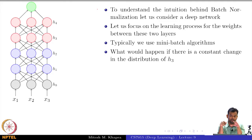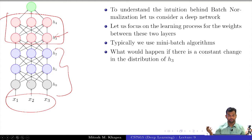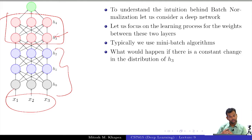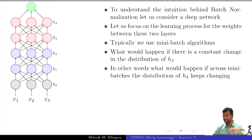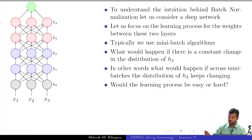What would happen if there is a constant change in the distribution of H3? As far as these two layers are concerned, H3 is the input and H4 is the output. It does not matter what X was or what distribution it came from. If across batches the distribution of H3 looks very different, that is a bad thing. If you have an input not following a fixed distribution — constantly changing during training — you try to adjust to one distribution and then the distribution changes completely. That makes your training very, very difficult.